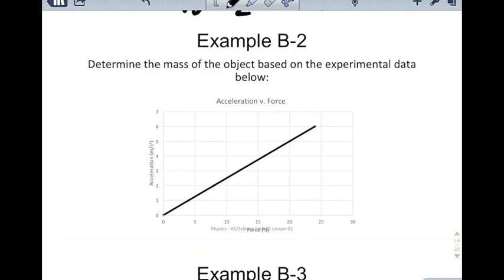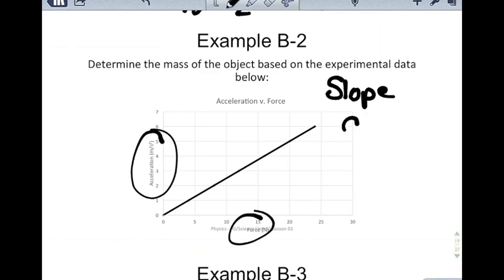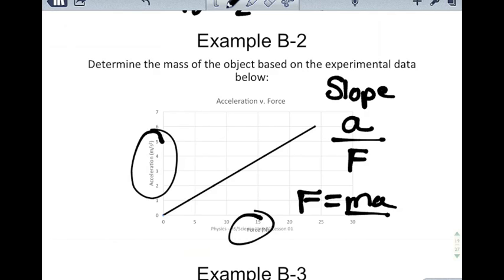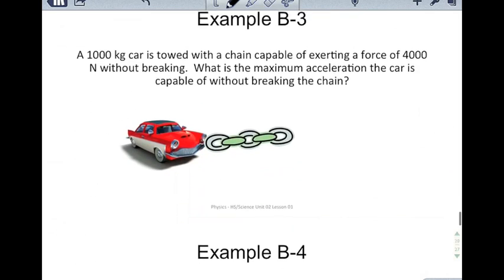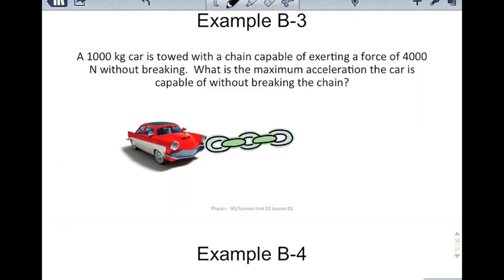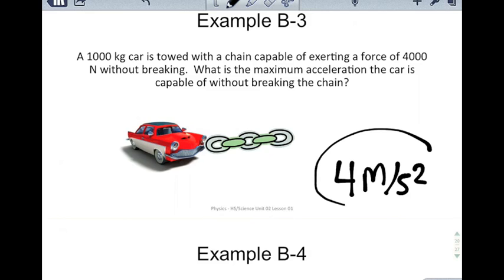The next question asks you to determine the mass of an object based on experimental data. If you find the slope of the graph of acceleration versus force, the slope gives you acceleration divided by force. Comparing that to F = MA, solving for mass gives M = F over A. You should be able to flip between those and solve for mass. Another problem: a 1,000 kilogram car is towed with a chain capable of exerting 4,000 Newtons without breaking. The maximum acceleration without breaking the chain is 4 meters per second squared — show your work.